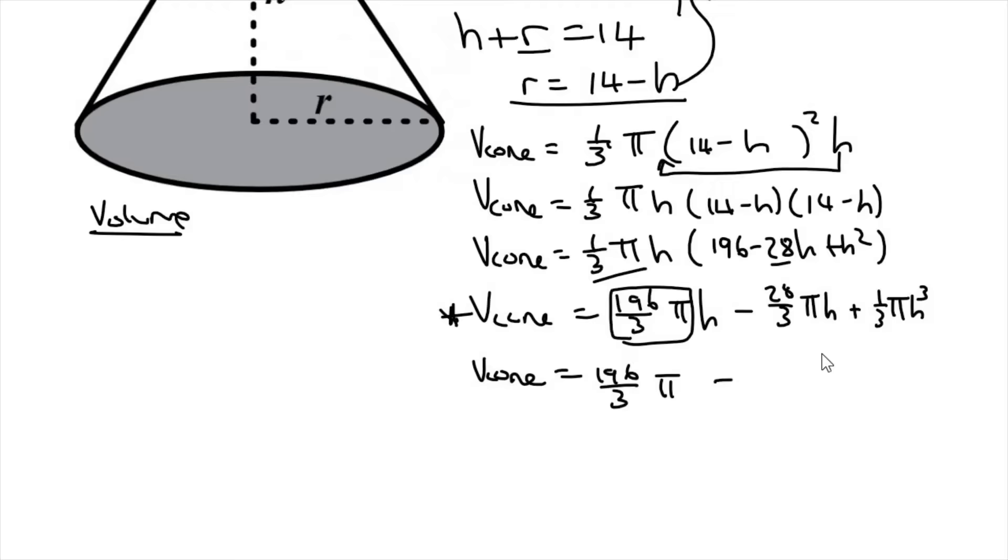And then that's, oh, this is meant to be an h squared. Maybe some of you saw that. My bad. And so what happens here is that this two is just going to multiply by 28 over three pi. So you can literally type in two times 28 over three pi on your calculator.